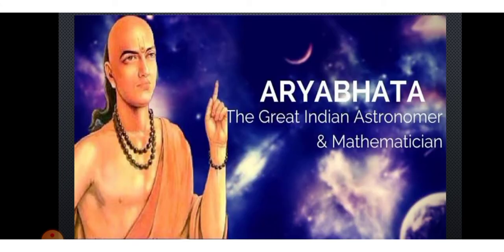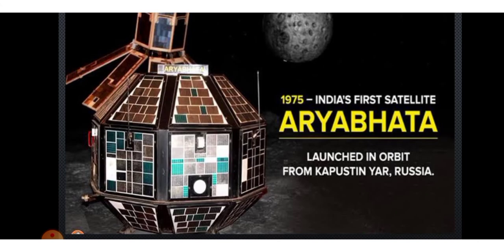India's first artificial satellite was Aryabhatta, named after the great Indian astronomer and mathematician Aryabhatta. It was launched by Russia in 1975 from Kapustin Yar, Russia.